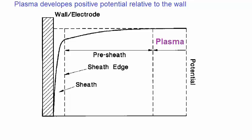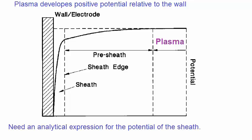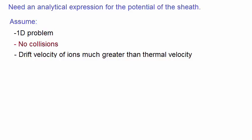Our main objective is to obtain an analytical expression for the potential of the sheath. To do that, we need to make a few assumptions. That it is a one-dimensional problem. There are no collisions. The drift velocity of the ions, in the sheath, is much greater than their thermal velocity.